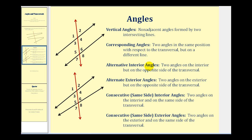Alternate interior angles are two angles on the interior, but on the opposite side of the transversal. Angles three, four, five, and six are on the interior because they're between the two lines being cut by the transversal. So since angle three and angle six are on opposite sides of the transversal, these are alternate interior angles, as well as angle four and angle five.